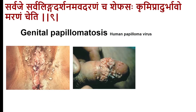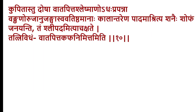Tridoshaja Upadamsha: Sarvalinga dharshana (all symptoms), Abadarana (destruction), chronic ulcer — this is typical of papillomatosis produced by human papillomavirus (HPV), also a sexually transmitted disorder. Symptoms appear after a long latent period. Multiple wart-like projections gradually appear in the genital area of both males and females, becoming proliferative and huge, resulting in significant deformity of the penis or vagina. This corresponds to Tridoshaja Upadamsha.